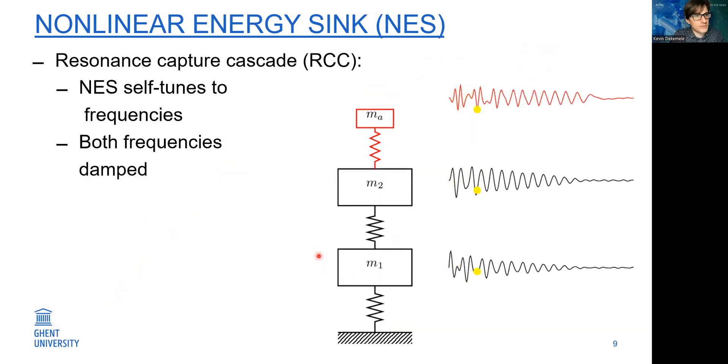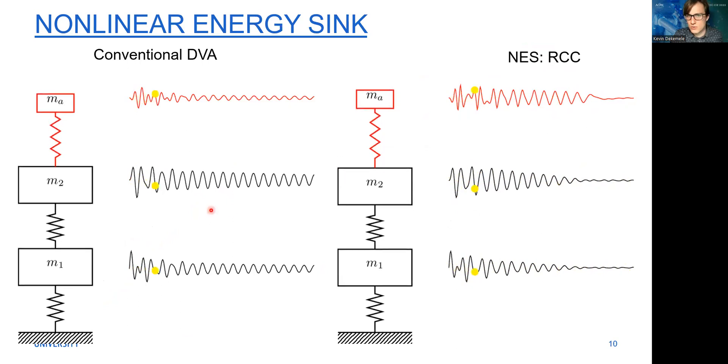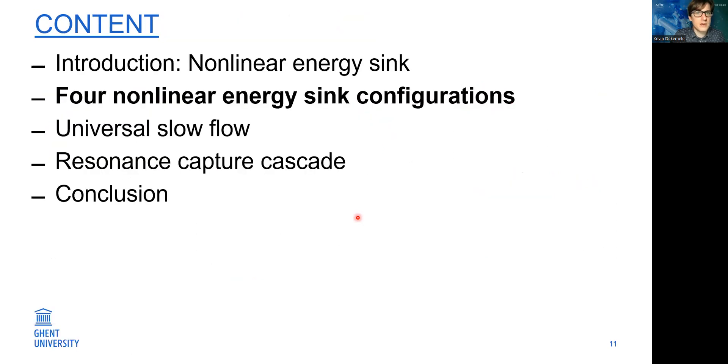If we attach it to a two degree of freedom system, resonance capture cascade happens. What is the resonance capture cascade? It's when the energy sink first vibrates with the higher frequency, damps this frequency, and then with the lower frequency, and also successfully damps this frequency. So it's a sequential transfer of vibration energy according to frequencies. Let's compare this to what the conventional DVA did and you can see a superior performance.